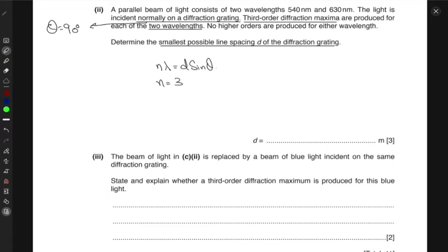So we have n as 3. And we have the wavelength lambda as 630 nm. We have the angle theta as 90 degrees. We want D. So D would be n lambda over sin theta. Now, the reason I chose lambda as 630 nm is because this wavelength is going to produce the smallest line spacing. So this corresponds to the smallest. So the bigger the wavelength, the smaller the line spacing.